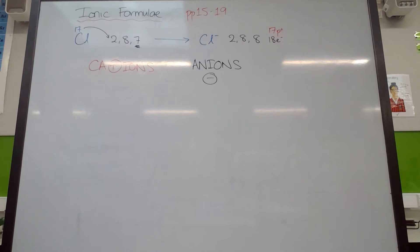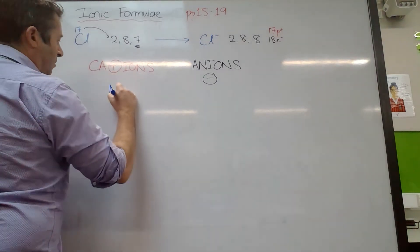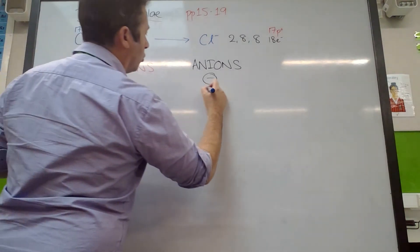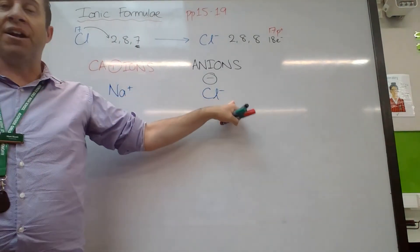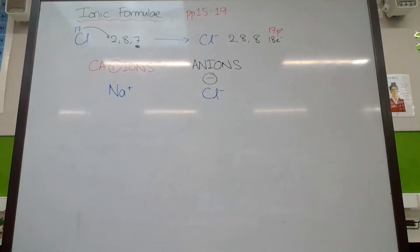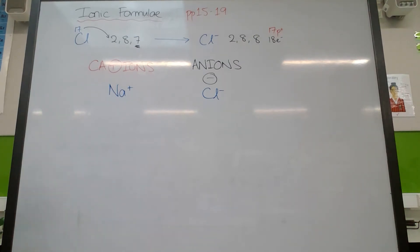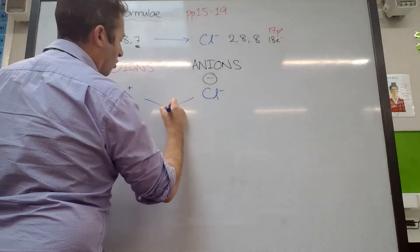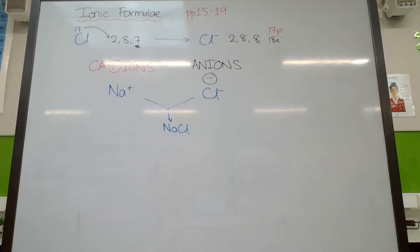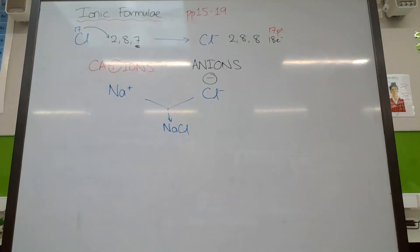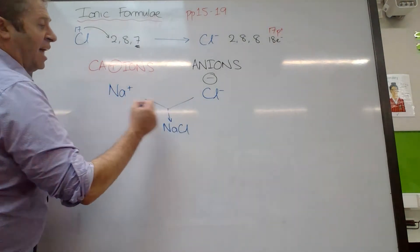This is really easy if we had something like, say, sodium and chloride ions, because this is plus 1 and this is minus 1. The plus and the minus attract each other, but they also cancel each other out. Sodium chloride has got no charge because they cancel out.